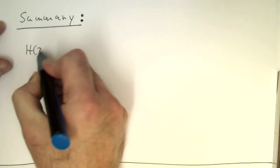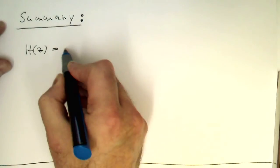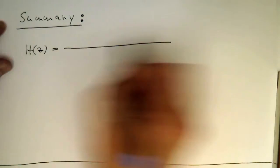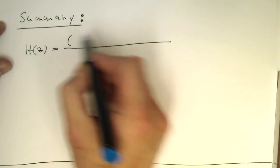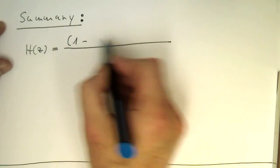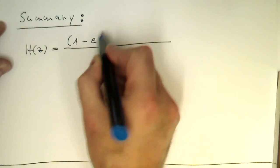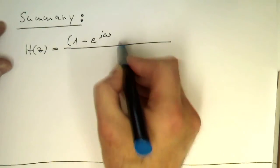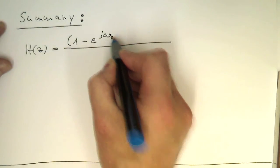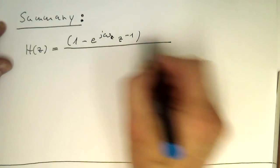So remember, we started off with a general form of a transfer function, which had its form like 1 minus e to the j omega z, and then multiplied this by z to the minus 1.